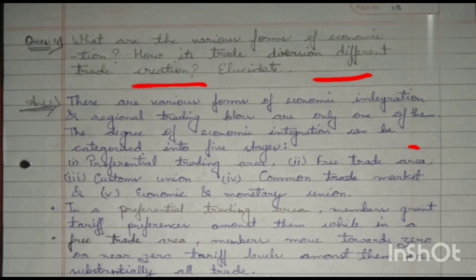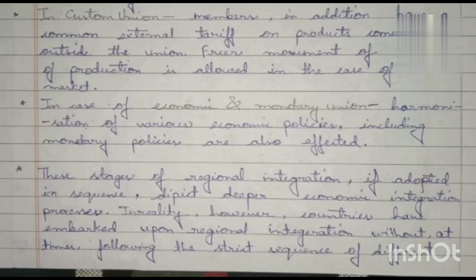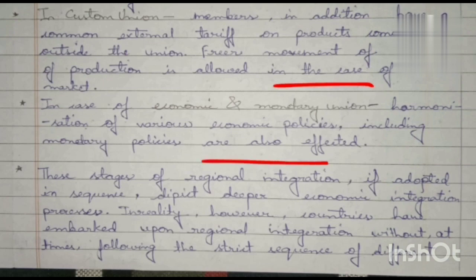In a Preferential Trading Area, members grant tariff preferences amongst them. In a Free Trade Area, members move towards zero or near-zero tariff levels amongst them. In a Customs Union, members additionally have a common external tariff on products from outside the union. Freer movement of factors of production is allowed in a Common Market. In an Economic and Monetary Union, harmonization of various economic policies including monetary policy are also effected.